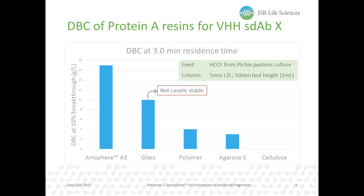However, the M3A3 protein A ligand shows also a high affinity to VHH single-domain antibodies. When we compare the dynamic binding capacity data of M3A3 to other commercially available protein A resins, shown here by the chemistry of the backbone, we clearly see the highest capacity for M3A3, with the resin coming closest having a 40% lower binding capacity and the disadvantage of not being caustic stable.